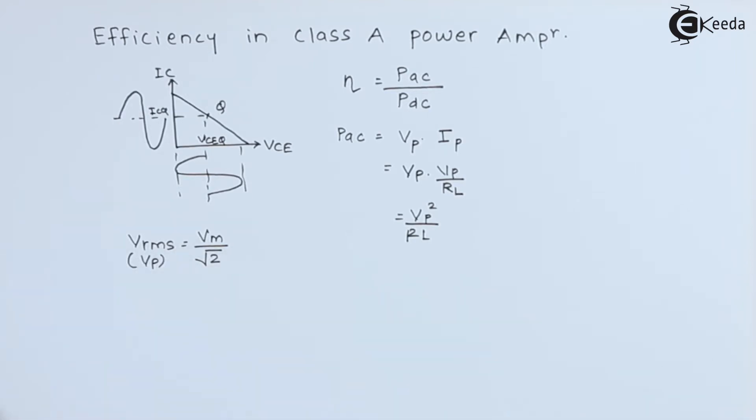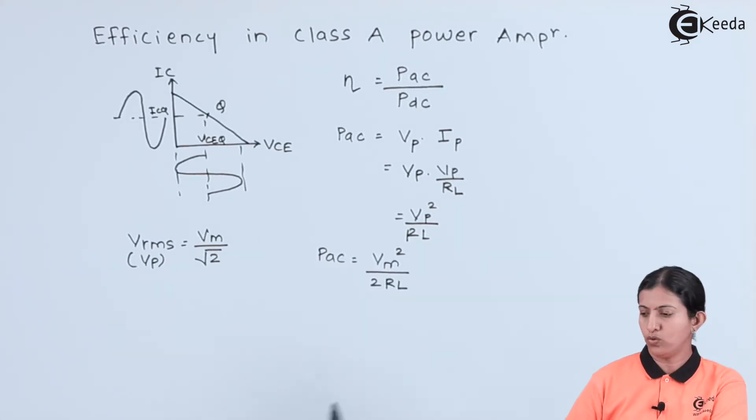Instead of Vp, we will write Vm which is the maximum voltage. PAC is equal to Vm squared divided by 2RL.